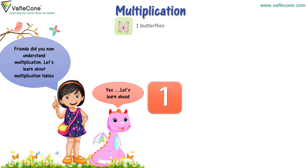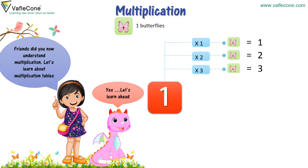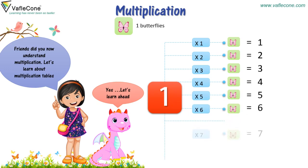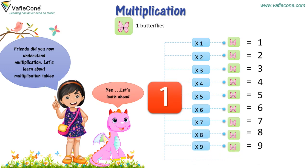1 into 1 is equal to 1. 1 into 2 is equal to 2. 1 into 3 is equal to 3. 1 into 4 is equal to 4. 1 into 5 is equal to 5. 1 into 6 is equal to 6. 1 into 7 is equal to 7. 1 into 8 is equal to 8. 1 into 9 is equal to 9.